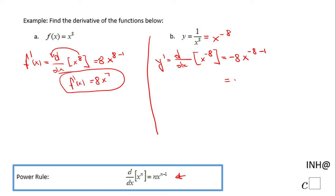And that will be negative 8x to the negative 9th power. This will be y prime. The only thing I'm going to be aware of: we don't like negative exponents, so we're going to have here negative 8 over x to the 9th power.